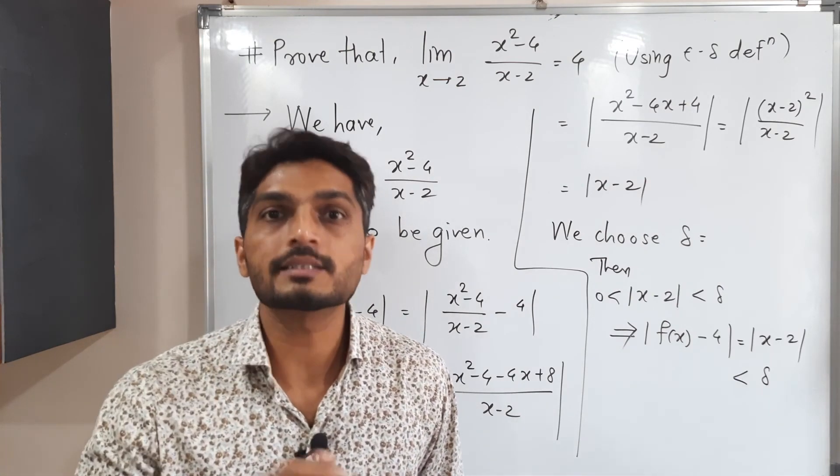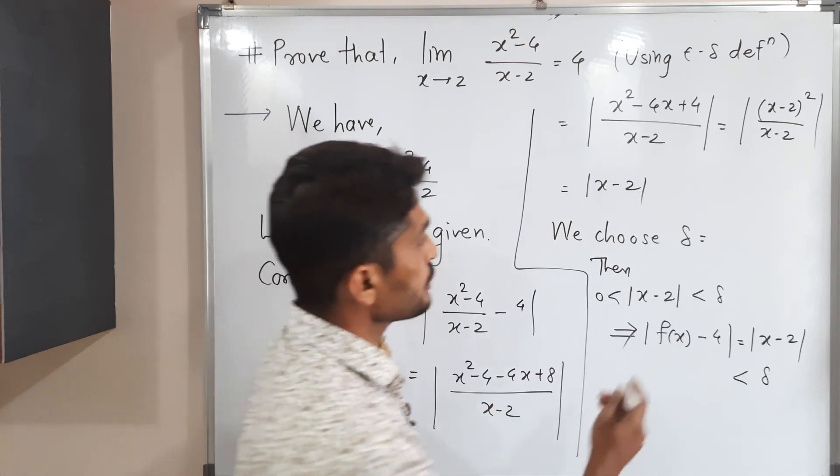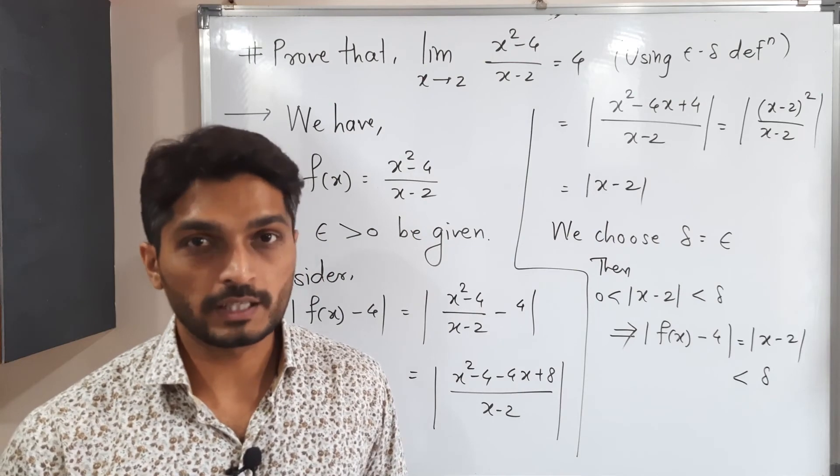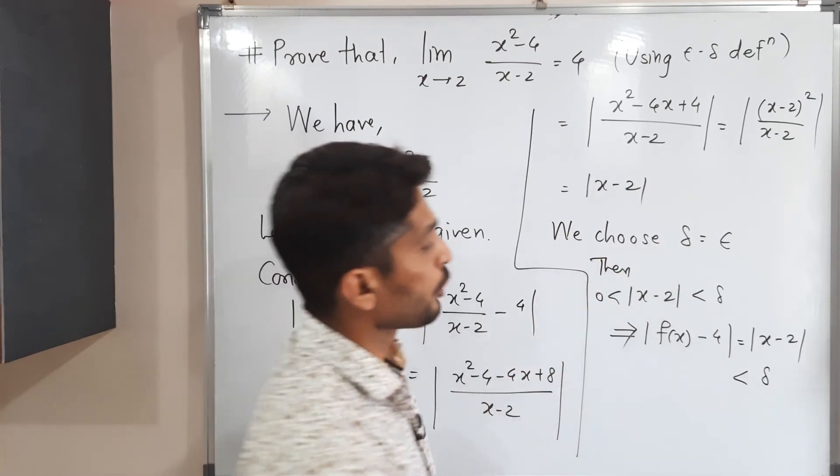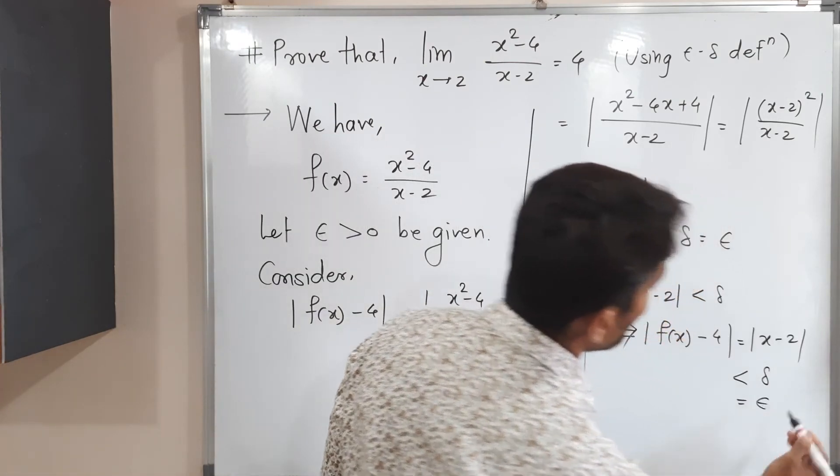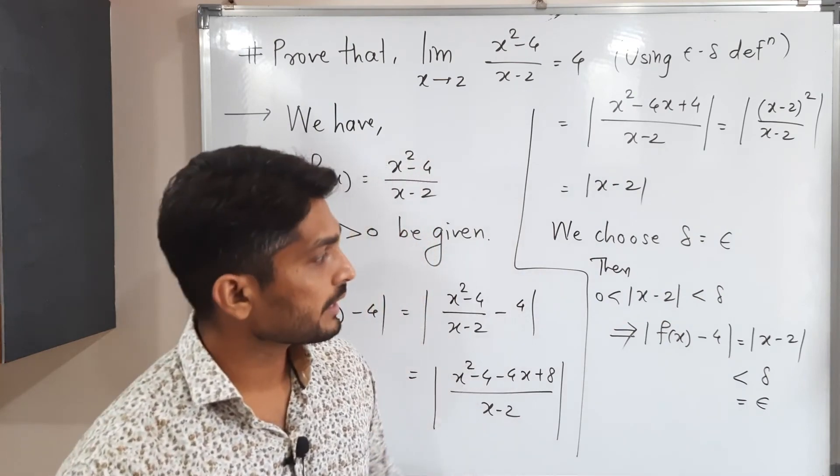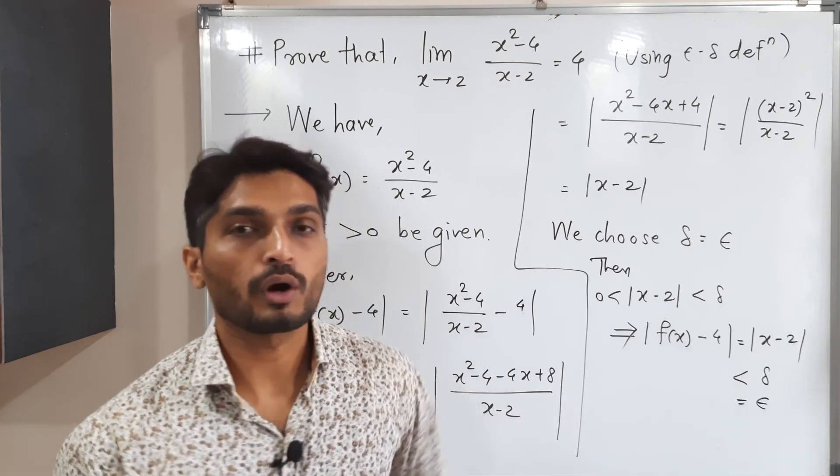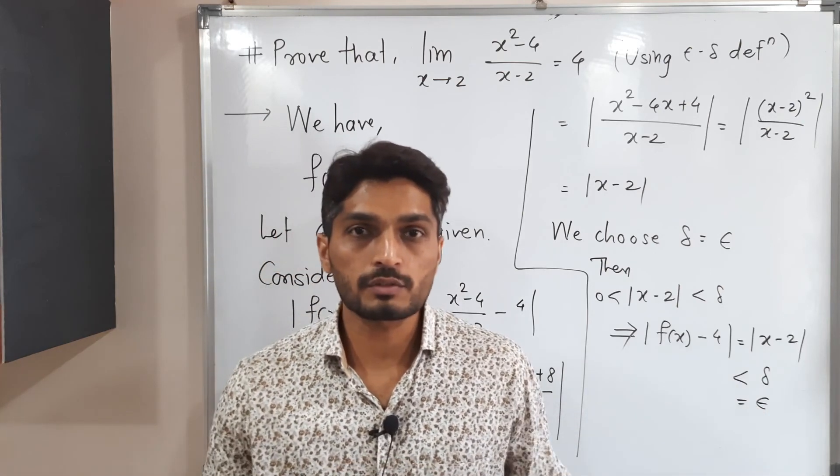So but what we have to show. We have to show that this is less than epsilon. So my choice of delta should be epsilon. Getting. So in this way we guess what should be our delta. So delta should be epsilon. So that's why we can write this is equal to epsilon.